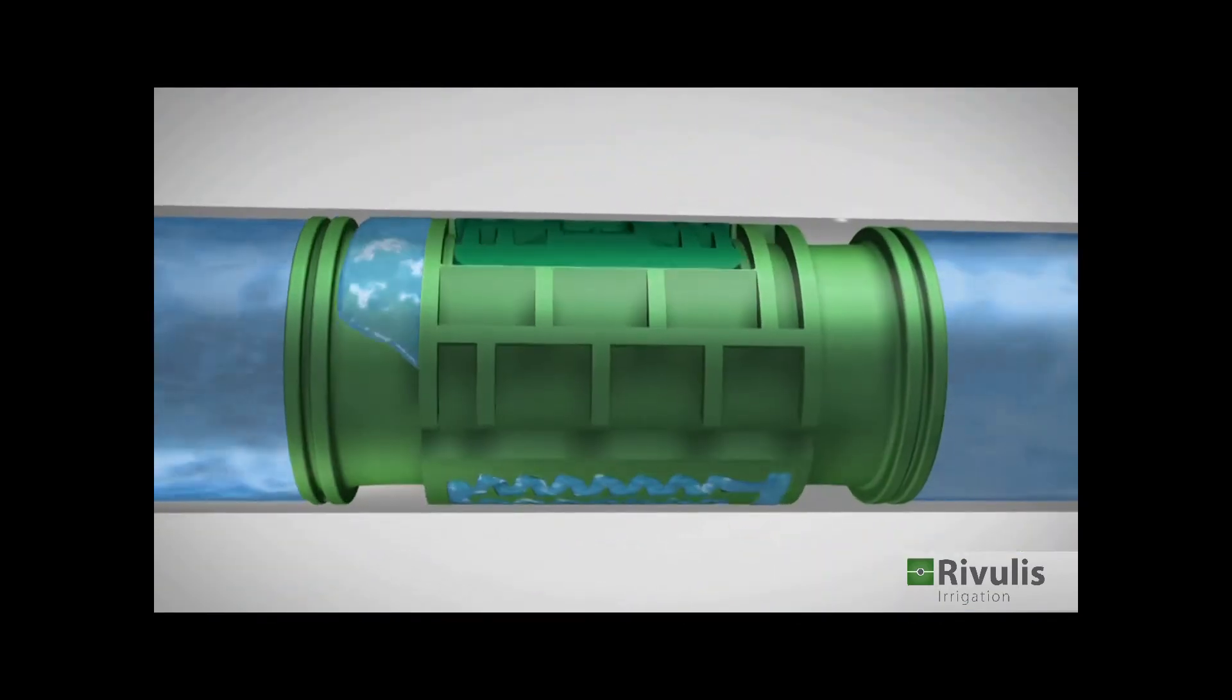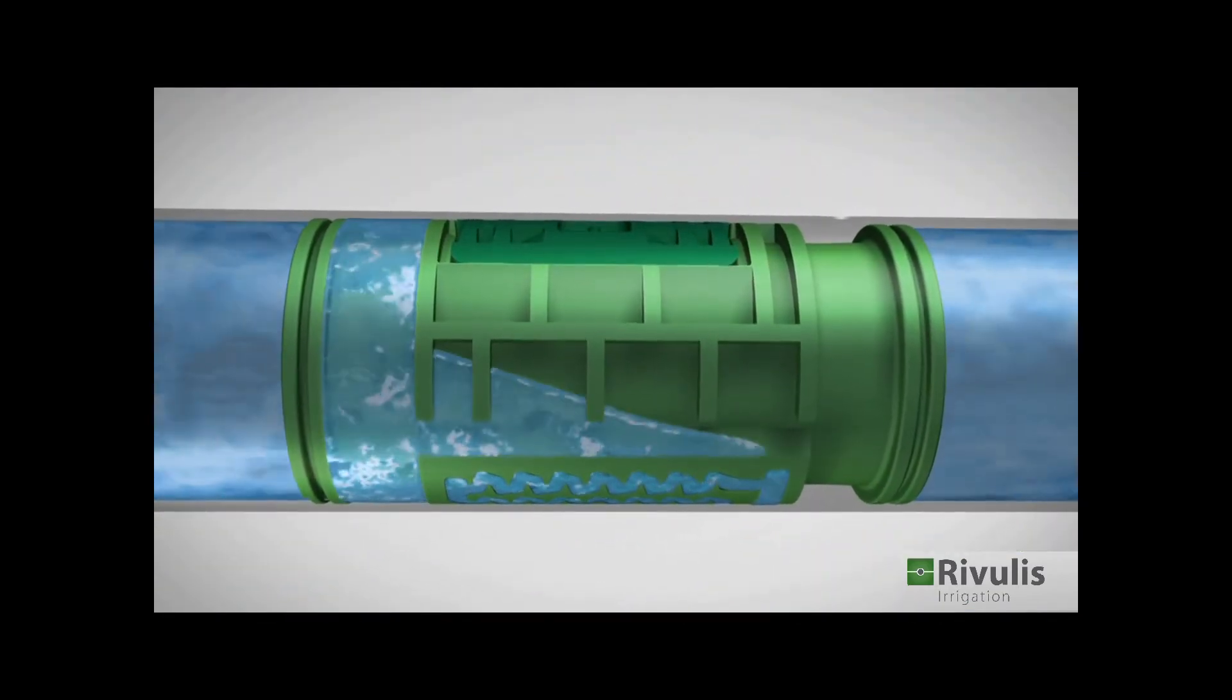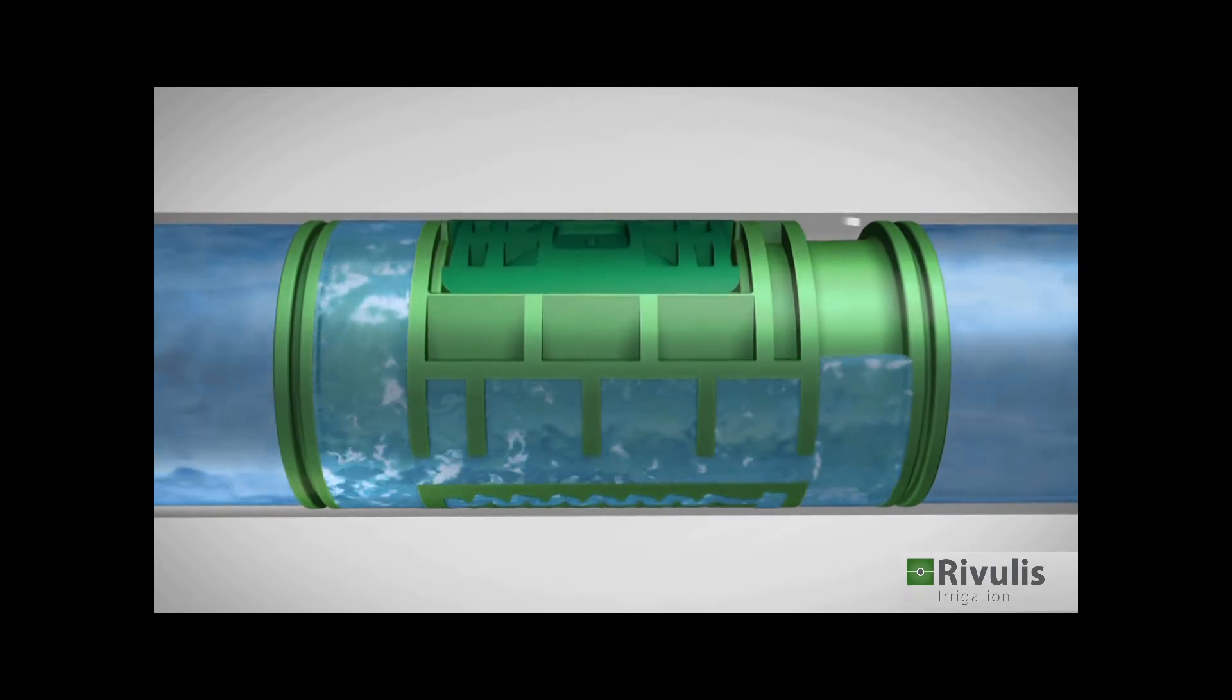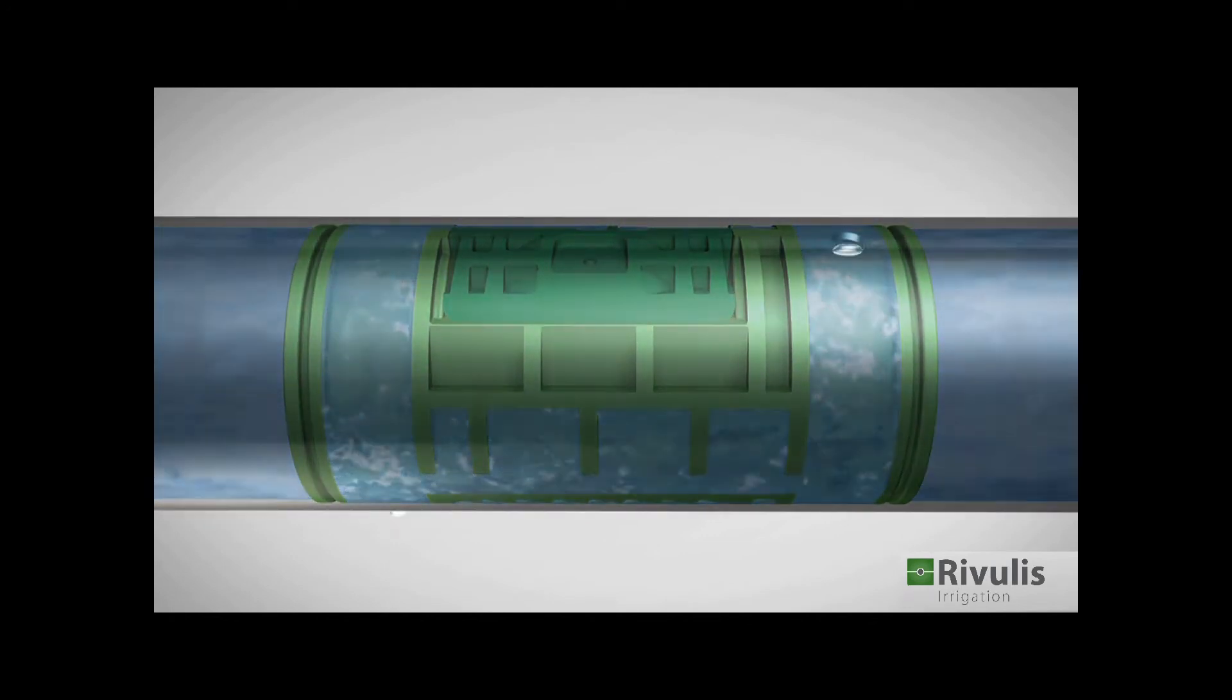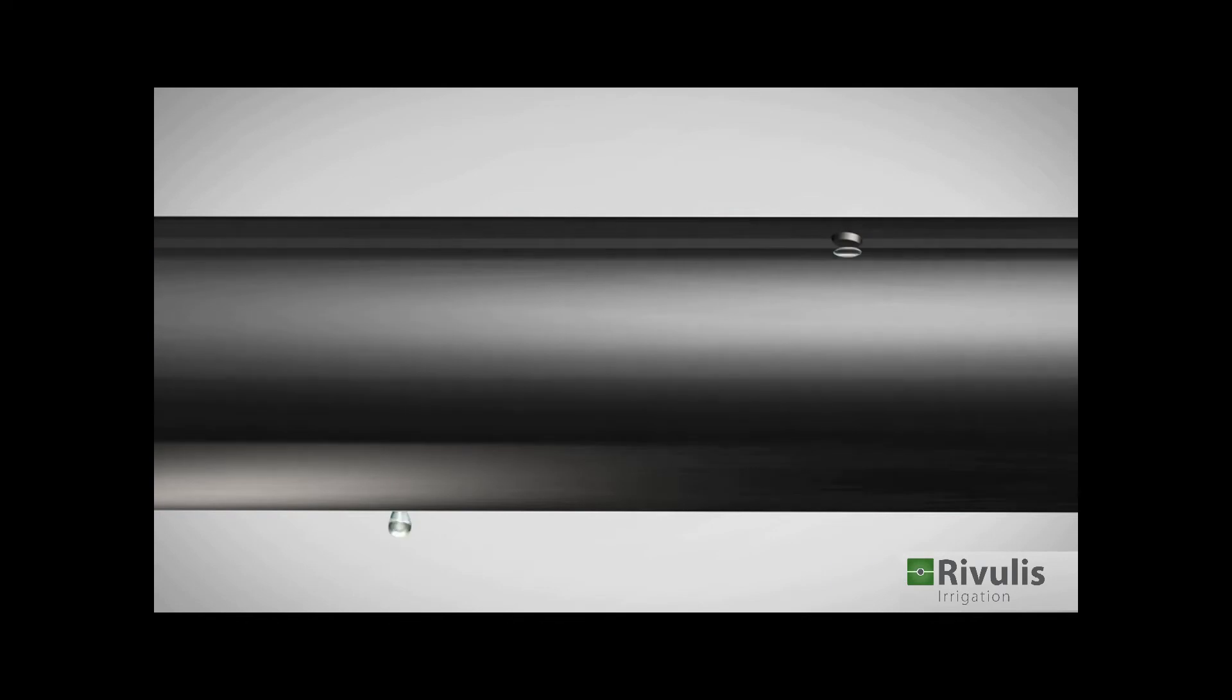The water reaching the regulating chamber exerts less pressure on the top part of the diaphragm and regulates the dripper's flow rate. The water continues to the outlet chambers and from there to the ground through two drip holes.